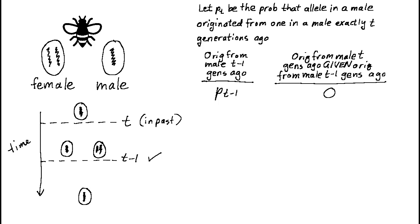We now execute the same thought process imagining that the allele in question originated from a female t minus 1 generations ago. Because we're working on the assumption we have our answer for t minus 1, we know that the probability of tracing ancestry back to a female t minus 1 generations ago is given by 1 minus p sub t minus 1.